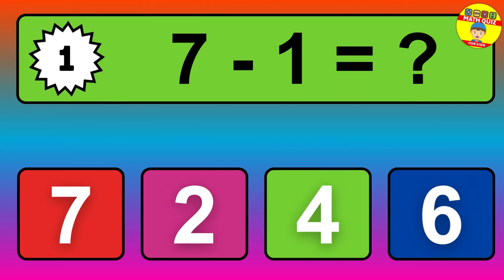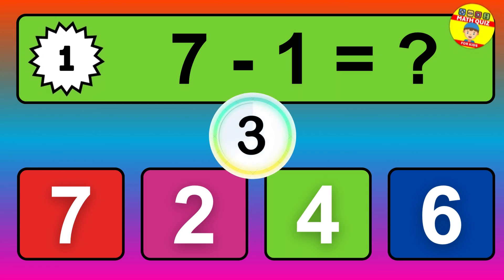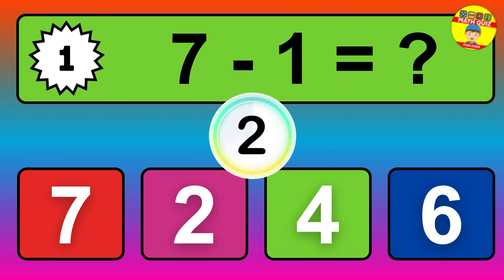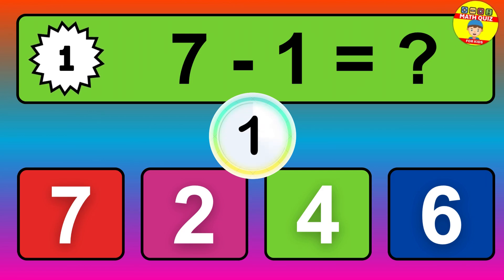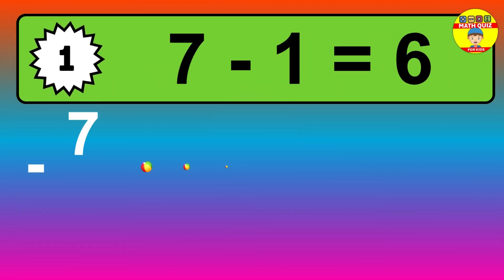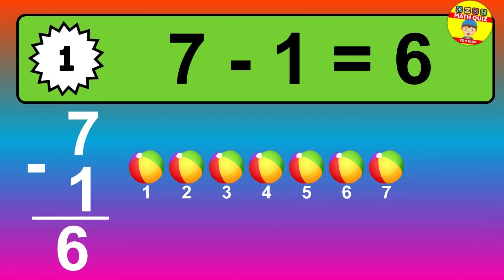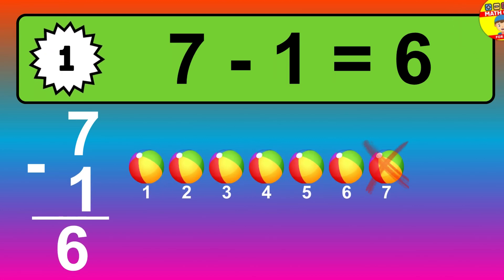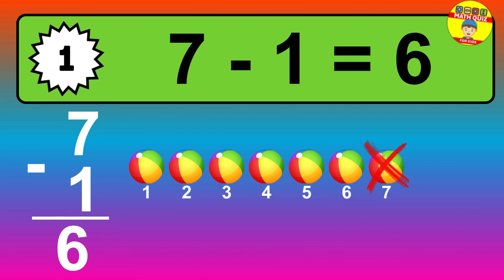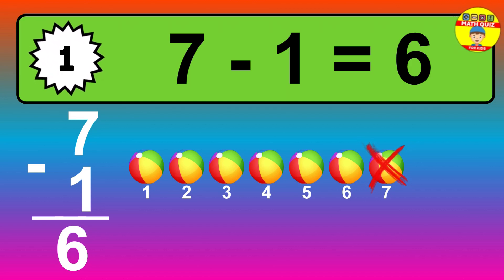Question one: seven minus one equals what? So the answer is seven minus one is six. Let's count it: one, two, three, four, five, six.